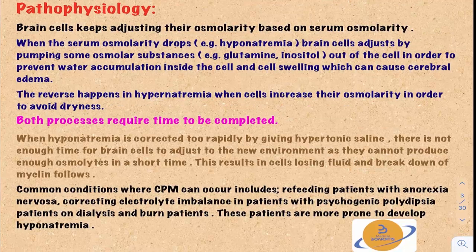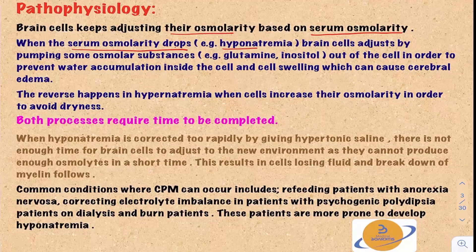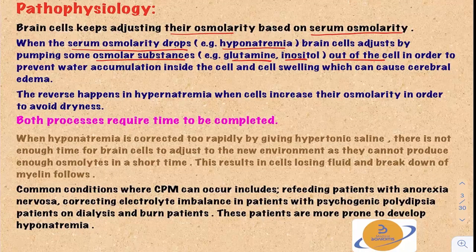The normal physiology of brain cells is that they adjust their osmolarity based on the serum osmolarity. So when the serum osmolarity drops, like in cases of hyponatremia, the brain cells adjust by pumping osmolar substances like glutamine and inositol out of the cell in order to prevent water accumulation inside the cell. Because if the cells don't do that, the water will keep coming into the cell, and this leads to cell swelling, which can cause cerebral edema.